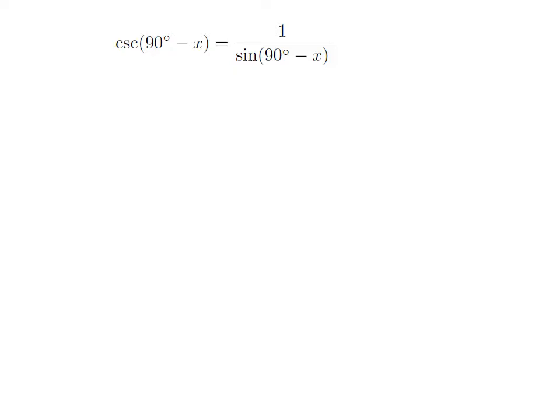As we know, cosecant of theta is equal to 1 upon sine of theta. So, cosecant of 90 degrees minus x is equal to 1 divided by sine of 90 degrees minus x.